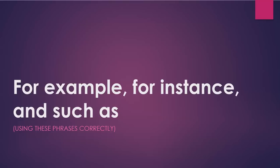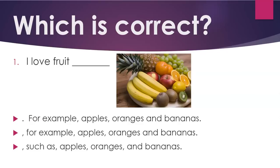For example, for instance, and such as — using these phrases correctly. Which is correct? Pay attention to the punctuation. Number one: I love fruit. Period — for example, apples, oranges, and bananas. Comma — for example, apples, oranges, and bananas.